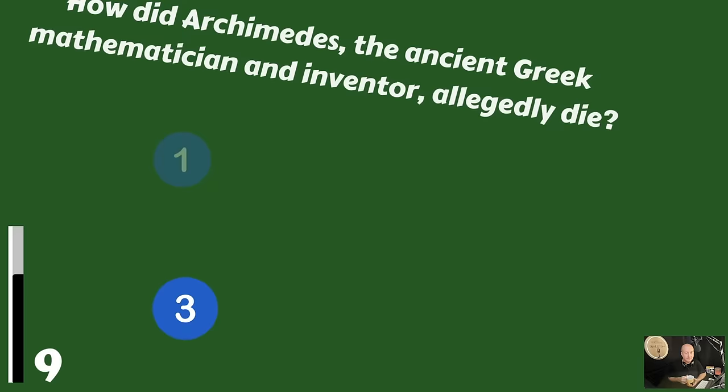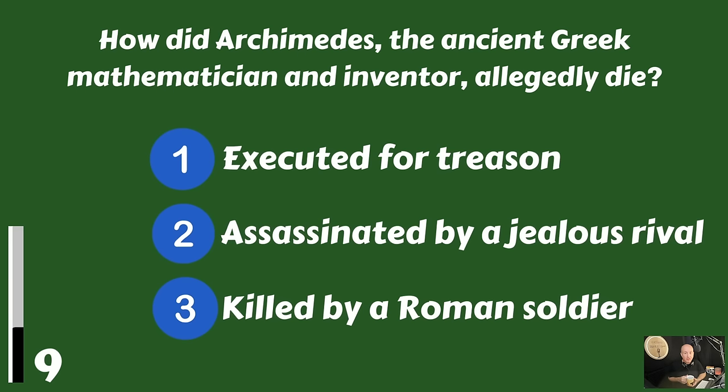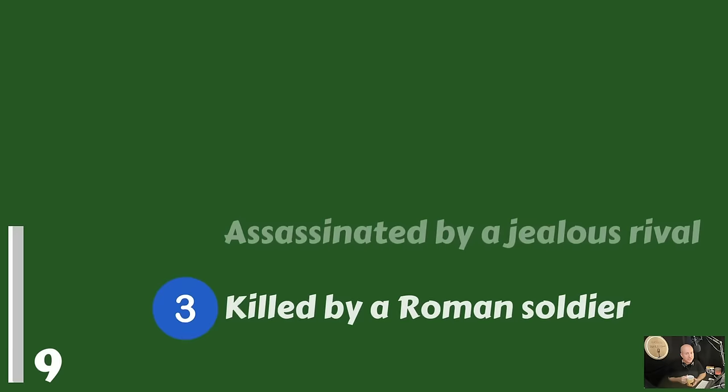How did Archimedes, the ancient Greek mathematician and inventor, allegedly die? Was he executed for treason, was he assassinated by a jealous rival, or was he killed by a Roman soldier? He was killed by a Roman soldier.